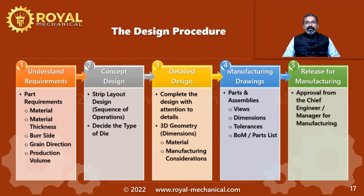In step 5, we are going to release the design data for manufacturing. Before releasing the design data, we need to obtain the approval from the head of the department or the chief engineer. Without this approval, the manufacturing activities will not be started. Please note, if the head of the department or the chief engineer finds a fault or a defect in the design, he or she is not going to approve the design data for manufacturing.